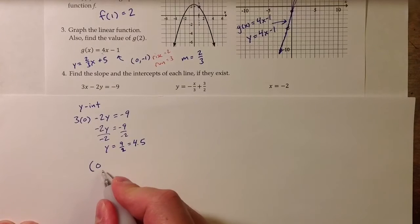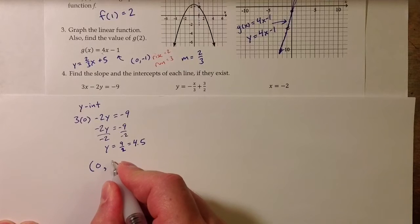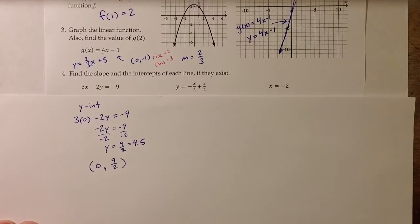The y-intercept is actually the ordered pair that has 0 as its x-coordinate and 9 over 2, or 4.5, as its y-coordinate.